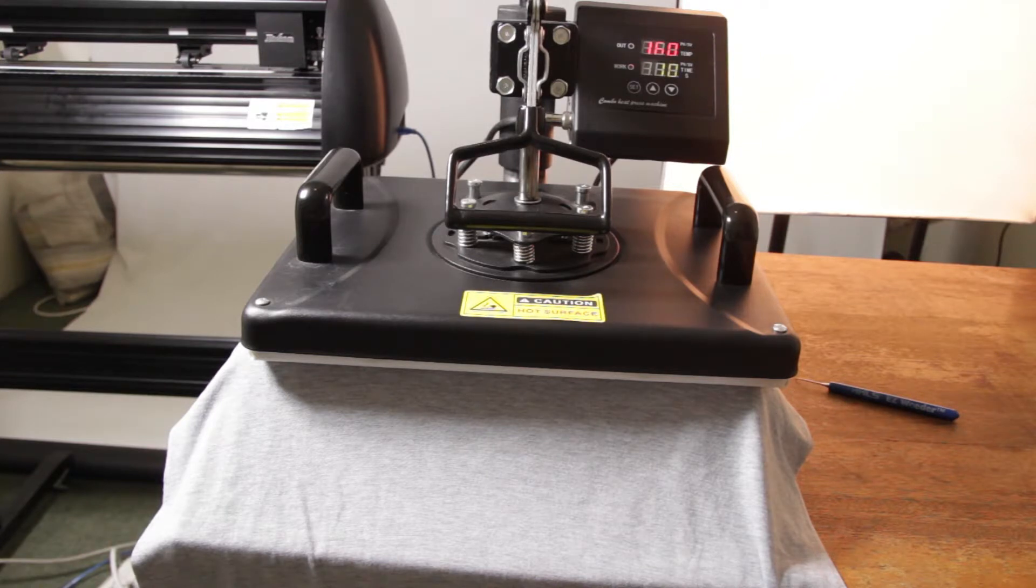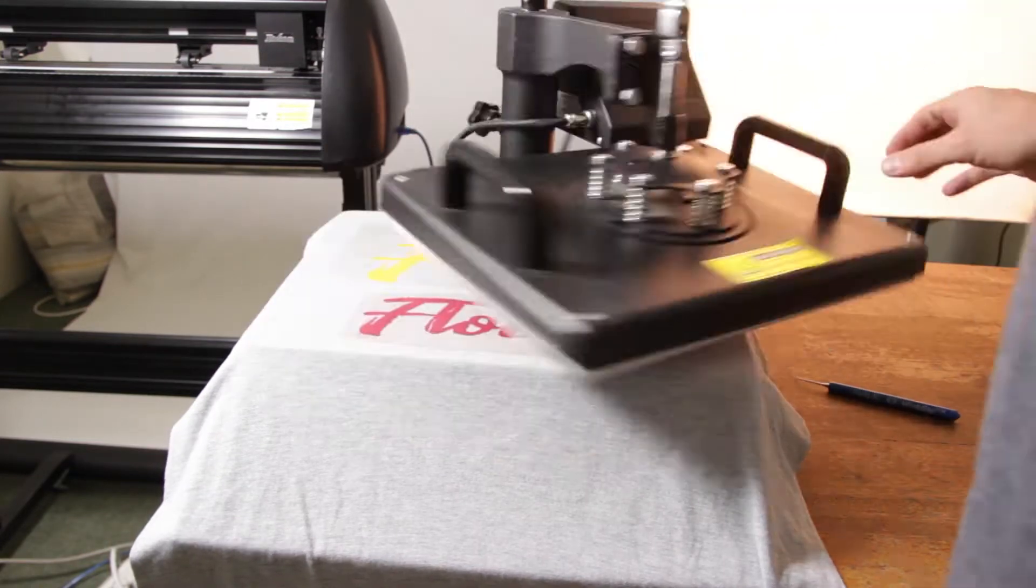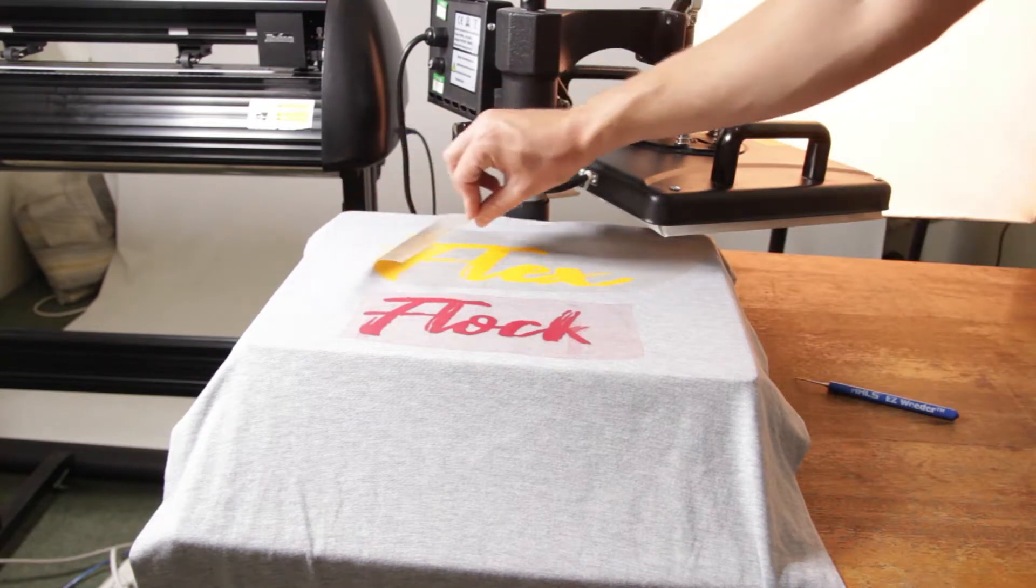Wait for the timer to run out and lift it up again. You can now peel off the heat resistant transfer paper.